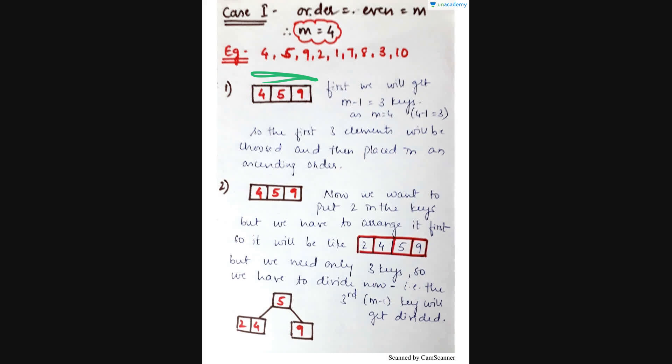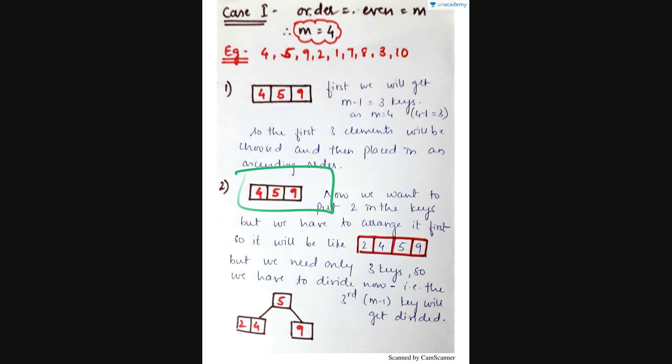Since 4, 5, 9 are already in ascending format, I will readily place these elements as 4, 5, and 9. Later, after 9, I have to insert 2. Before inserting, we can only place 3 elements — that is 3 key nodes — not more than that, as the rule gets violated because we always need m-1 key nodes. So firstly we will arrange it in ascending order as 2, 4, 5, 9.